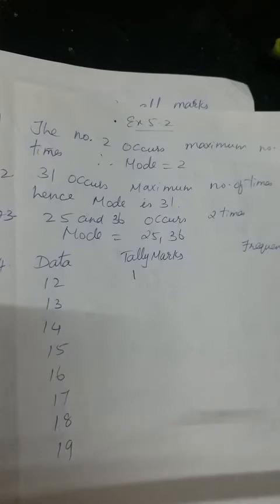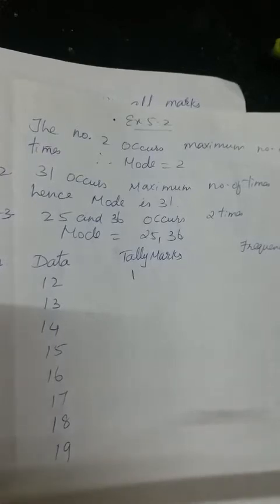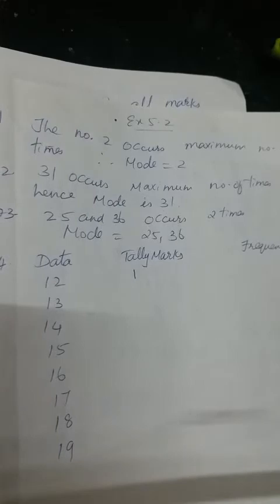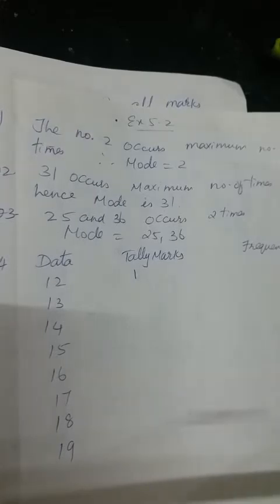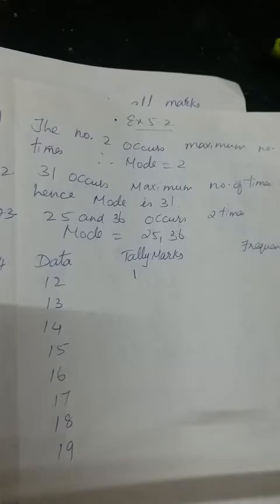Here the first number given is 25. Now 25 is coming how many times? 1, 2, 3 — 3 times. Then 36, if you see — 1, 2, 3 — 36 is also coming 3 times. Then 39 is coming 1 time. 38 is coming 2 times. So here when you see, 25 and 36 are repeating maximum number of times.